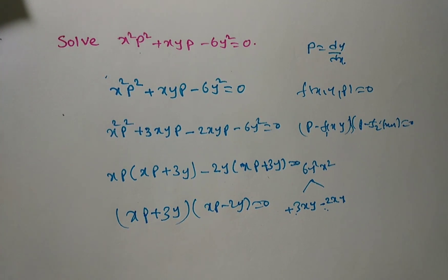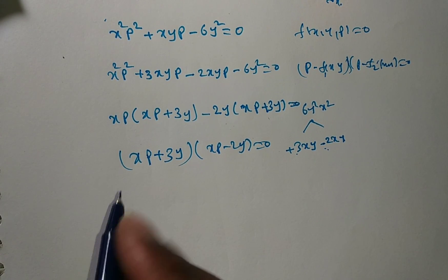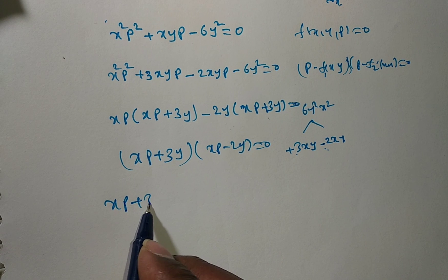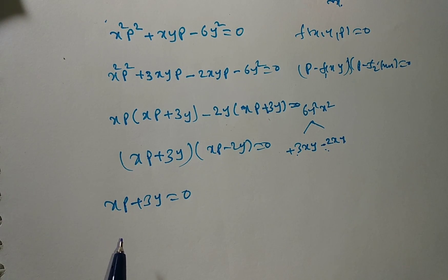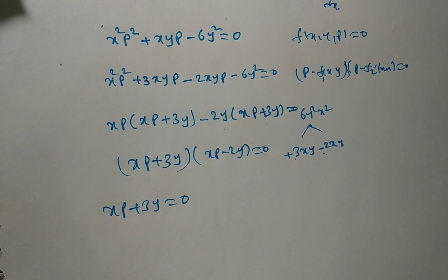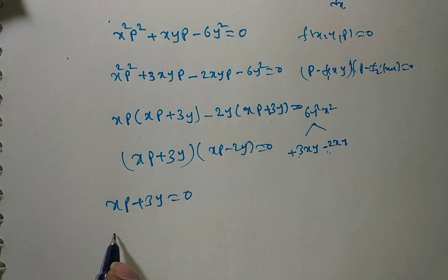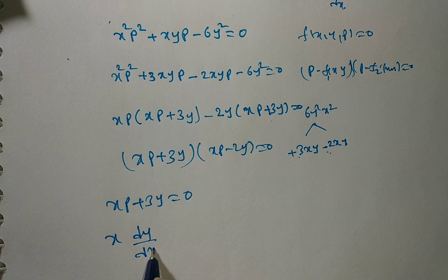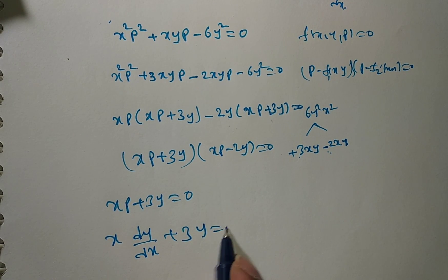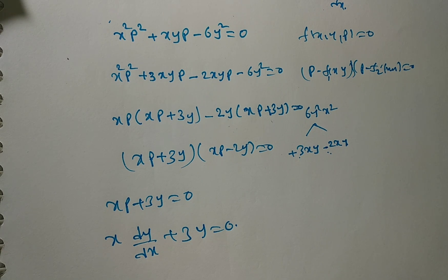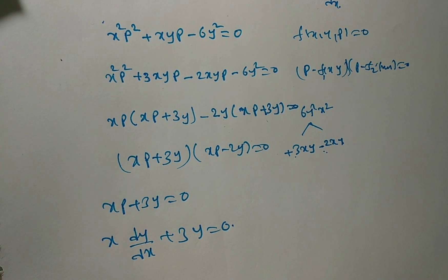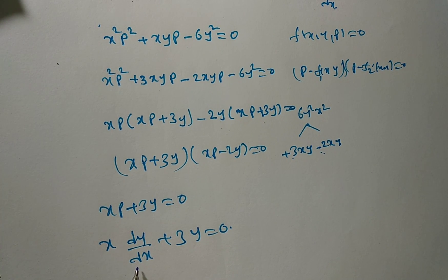This is a product of two terms. Taking the first factor: xp plus 3y equals zero. Replacing p with dy/dx gives x·dy/dx plus 3y equals zero. This is a first order, first degree equation, so we use the variable separable method.